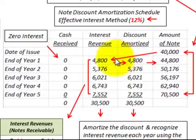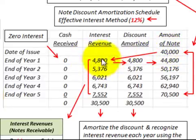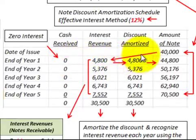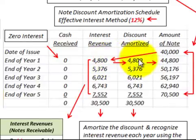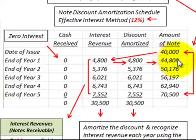To amortize the note, we take the beginning balance of forty thousand dollars and multiply by twelve percent — the effective interest rate — giving us interest revenue for year one of forty-eight hundred dollars. Since there's no cash payment, the discount amortized equals the interest revenue of forty-eight hundred dollars. Adding that to the beginning balance gives us a new balance at end of year one of forty-four thousand eight hundred dollars.